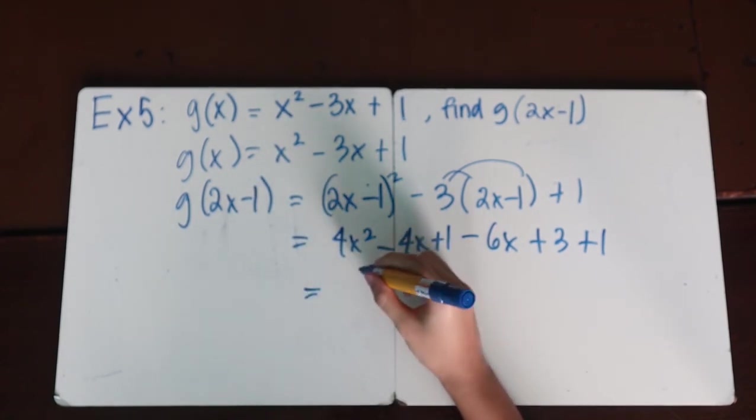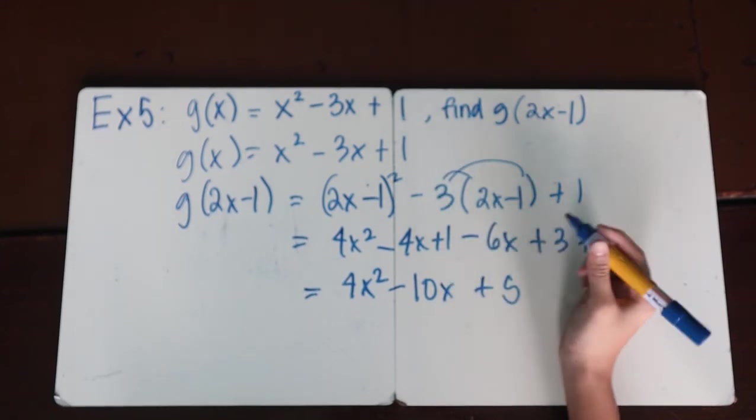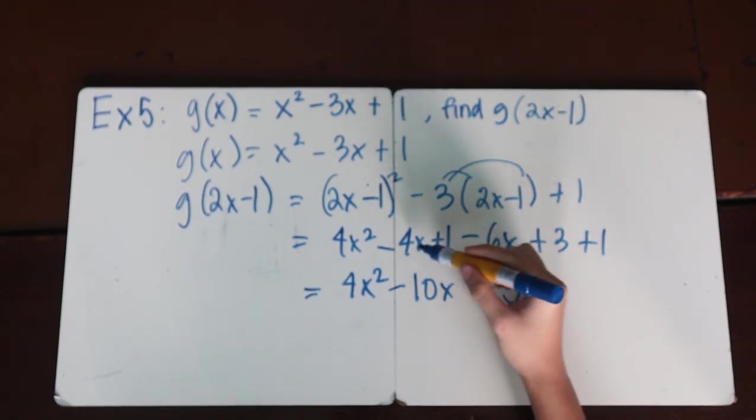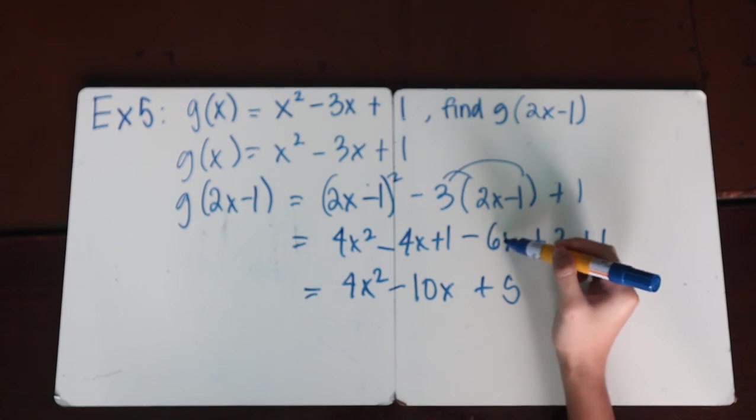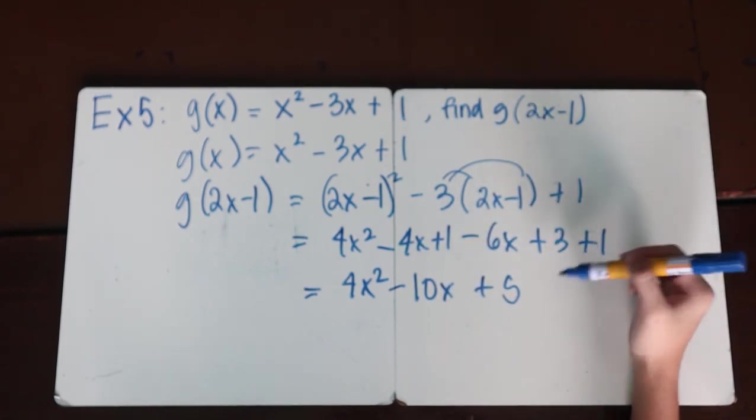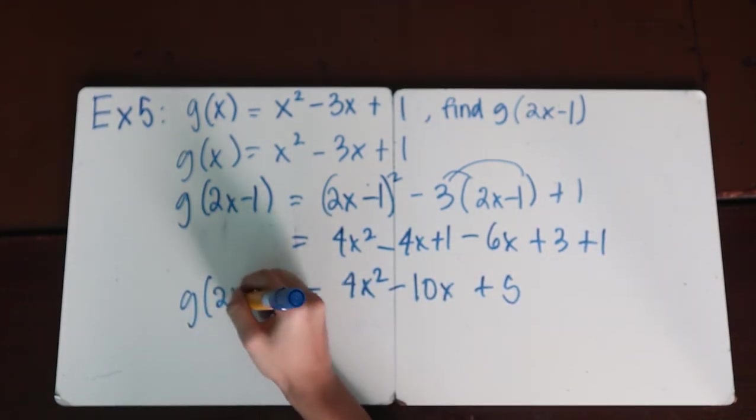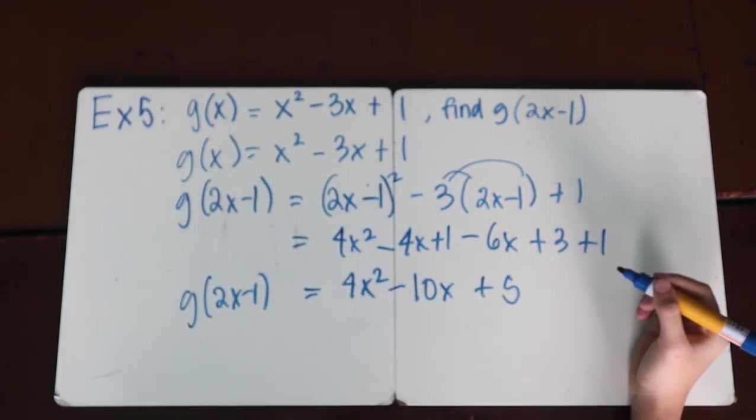Then add the similar terms: 4x² - 10x + 5. So 4x², negative 4x minus 6x is negative 10x, 1 plus 3 plus 1 is 5. And that's the answer for g(2x - 1). It's the final answer.